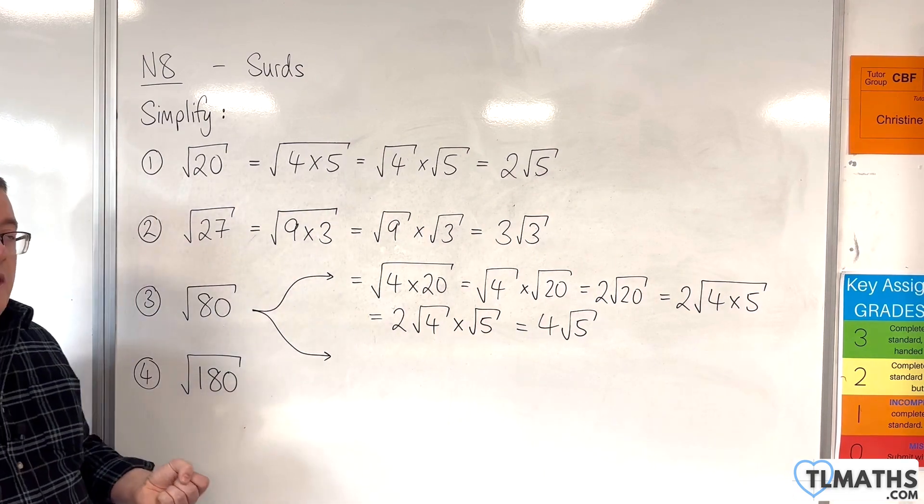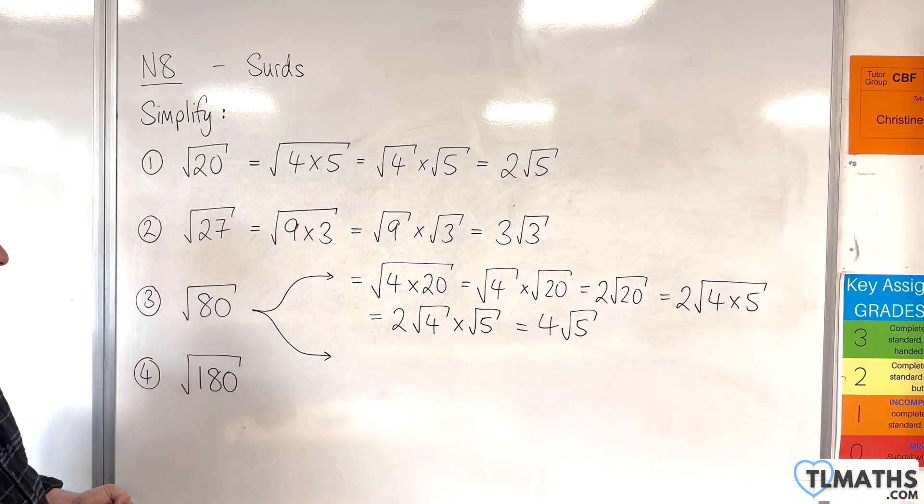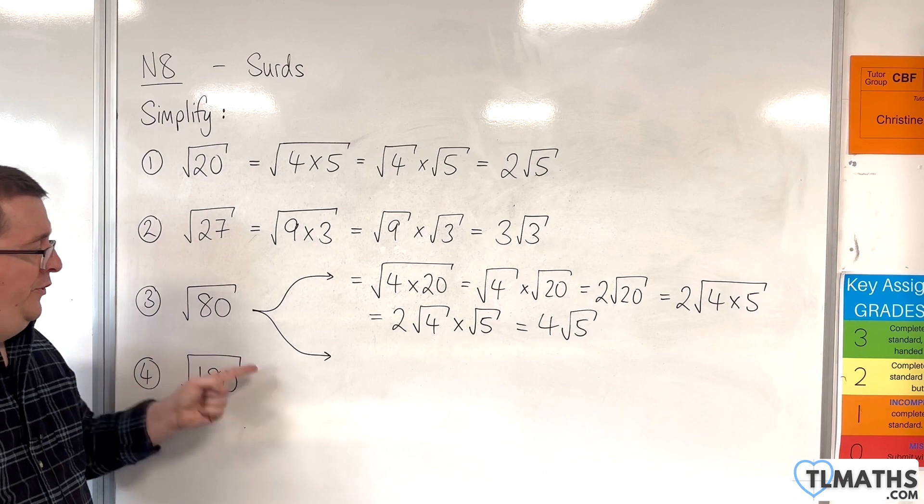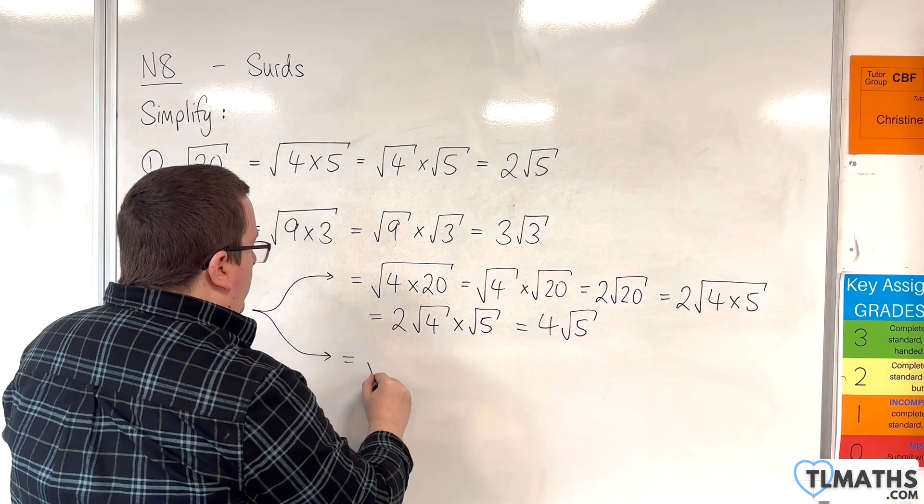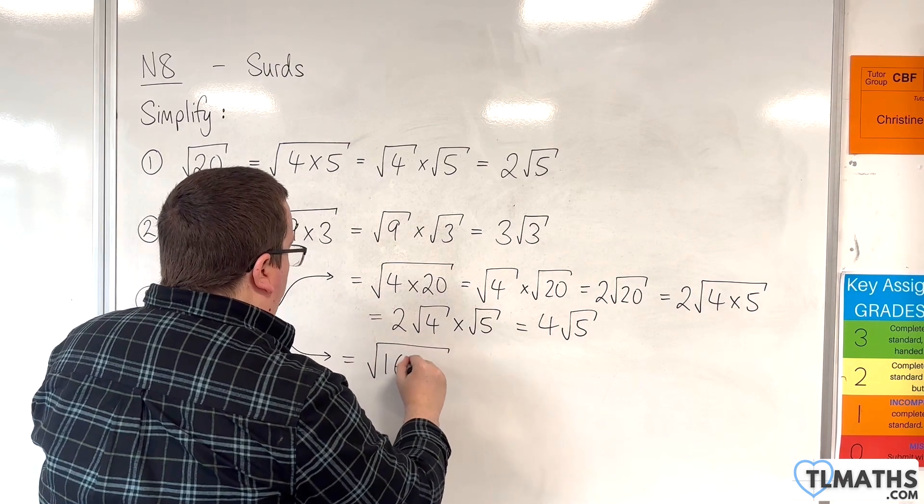So you could have done it in a couple of steps. Alternatively, if you spot the 16 first, you can write it as 16 times 5.